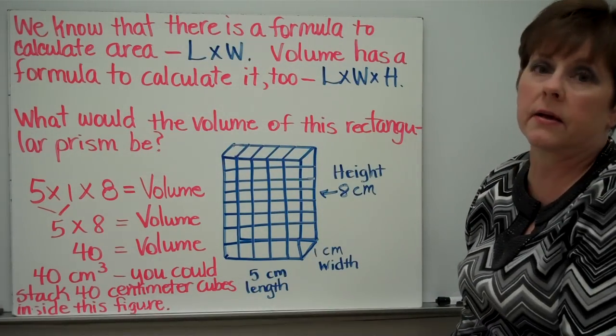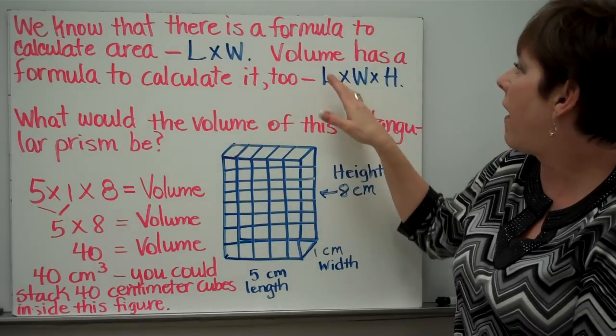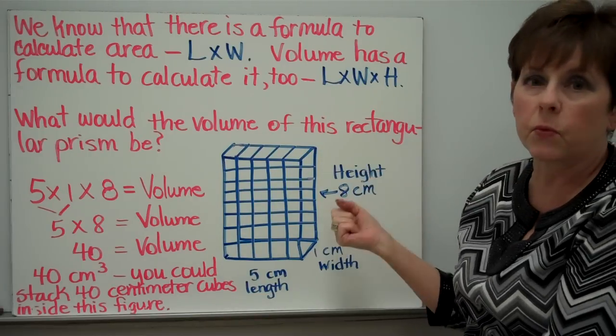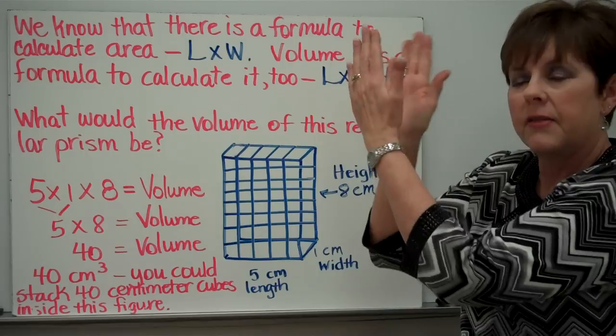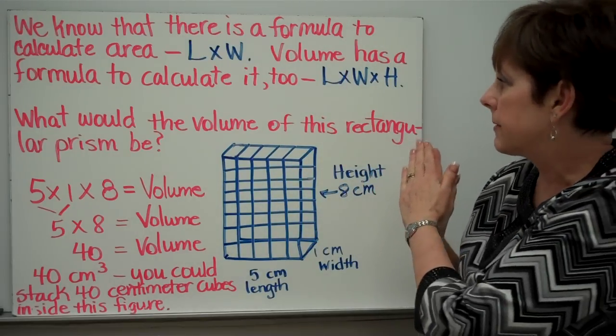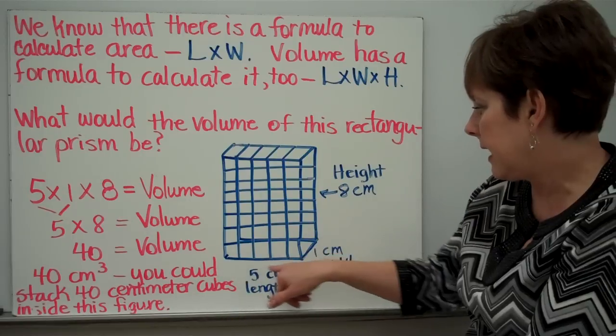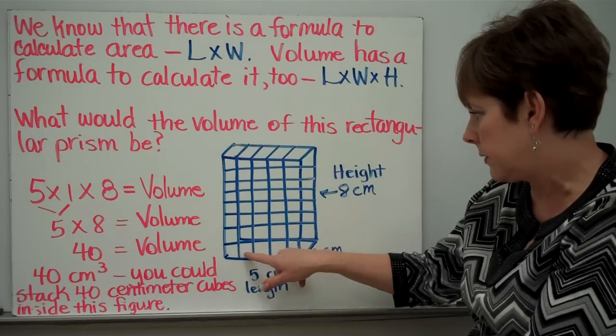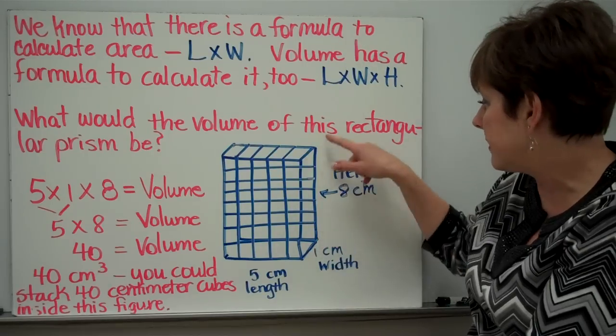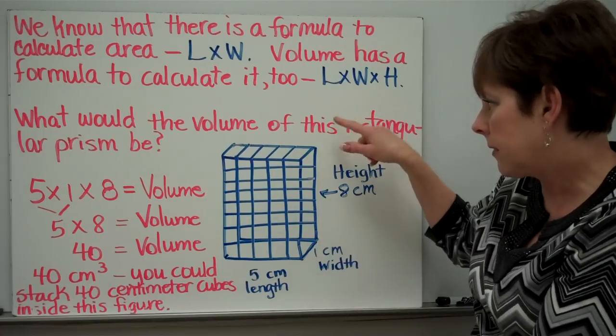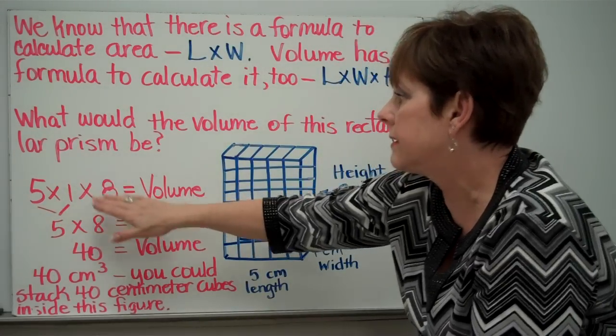We know that there's a formula to calculate area, and that's length times width. Volume has a formula to calculate it also, and that's length times width times height. You can't multiply all three of them at once. You have to do two first, then multiply that by your third measurement. As an example, what would the volume of this rectangular prism be? It has a length of five centimeters, a width of one centimeter, and a height of eight centimeters. So we could say length times width times height would be five times one times eight. And that would equal our volume.